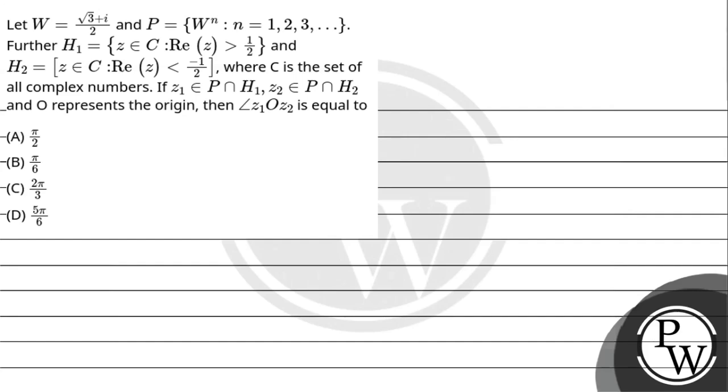Hello, let's read this question. Let w is equal to root 3 plus iota upon 2, and p is equal to w raised to power n, where n is equal to 1, 2, 3 and so on.